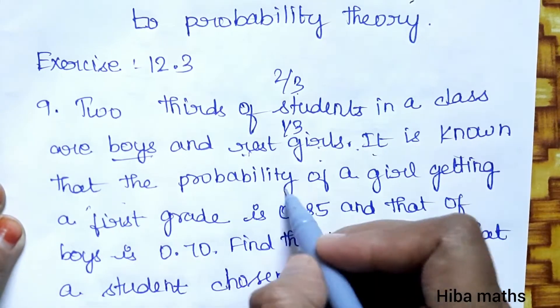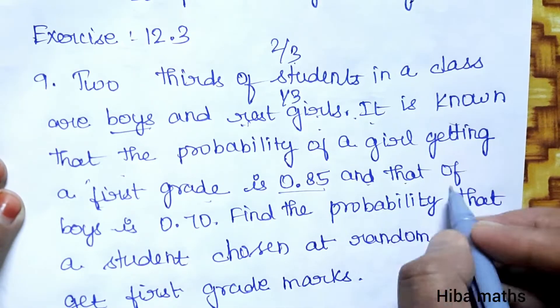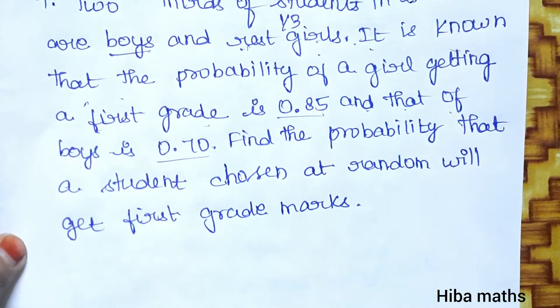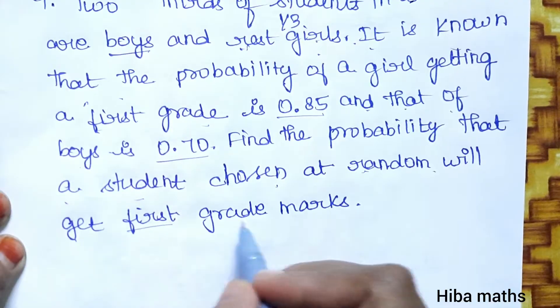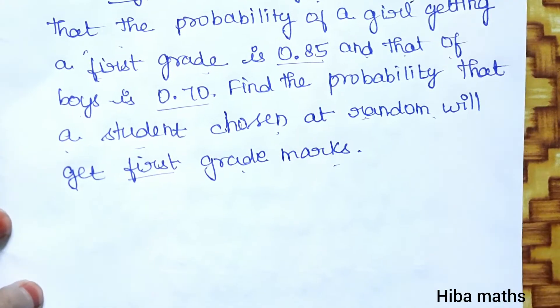It is known that the probability of a girl getting first grade is 0.85 and that of a boy is 0.70. Find the probability that a student chosen at random will get first grade marks. We need to solve this in two parts.